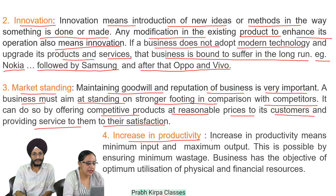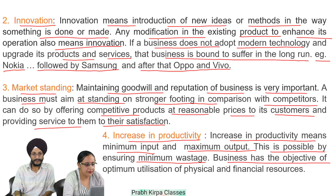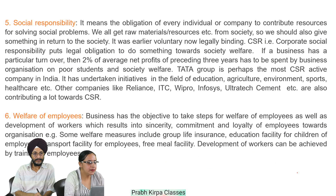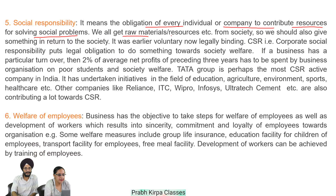A business must aim at standing on a stronger footing in comparison with competitors. It can do so by offering competitive products at reasonable prices to its customers and providing service to their satisfaction. Fourth, increase in productivity: increase in productivity means minimum input and maximum output — this is possible by ensuring minimum wastage. Business has the objective of optimum utilization of physical and financial resources. Fifth, social responsibility: it means the obligation of every individual or company to contribute resources for solving social problems. We all get raw materials and resources from society, so we should also give something in return.